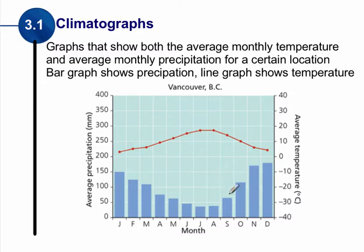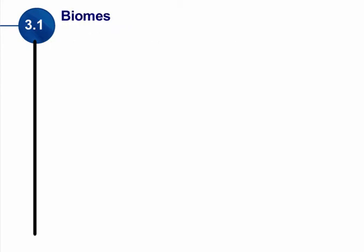In the winter months — November, December, January, February, and March — we can see a lot of precipitation and a much lower temperature. So the climatograph gives us a snapshot of climate for an area, and again it can represent a large area or a small area depending on what we're trying to look at.